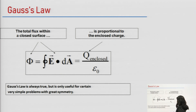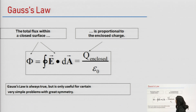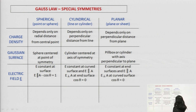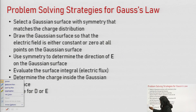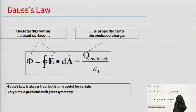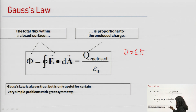Let us quickly review the concept of Gauss law. Gauss law states that total flux will be equal to total charge enclosed. Here we have used E, which is electric field intensity, and we know that D is equal to epsilon times E. As we have used E in place of D, that is why we have used epsilon naught on the right side. So Gauss law is always true, but is only useful for certain very simple problems with great symmetry.